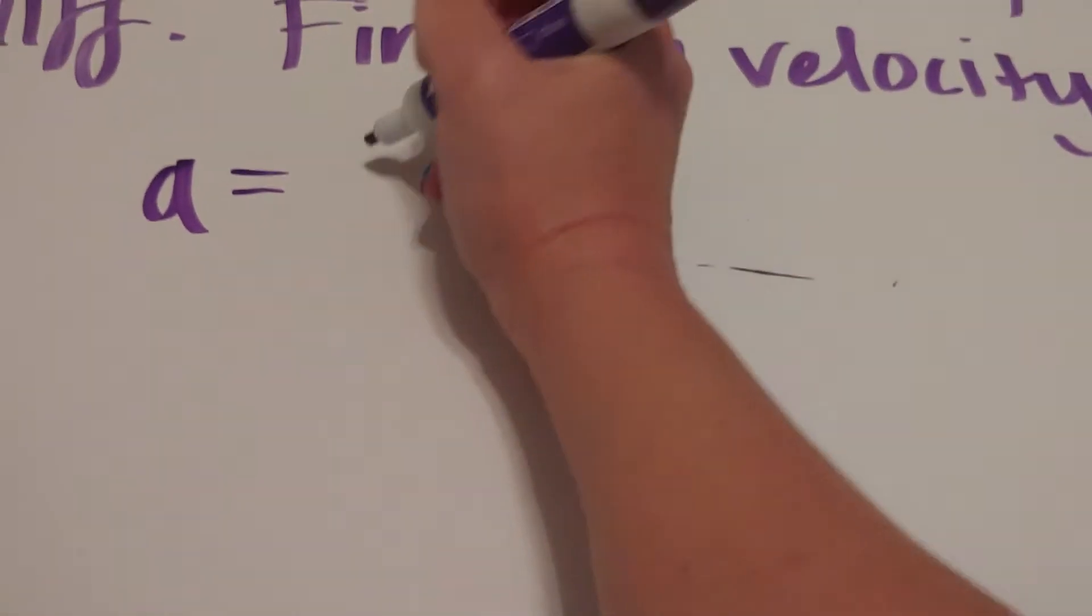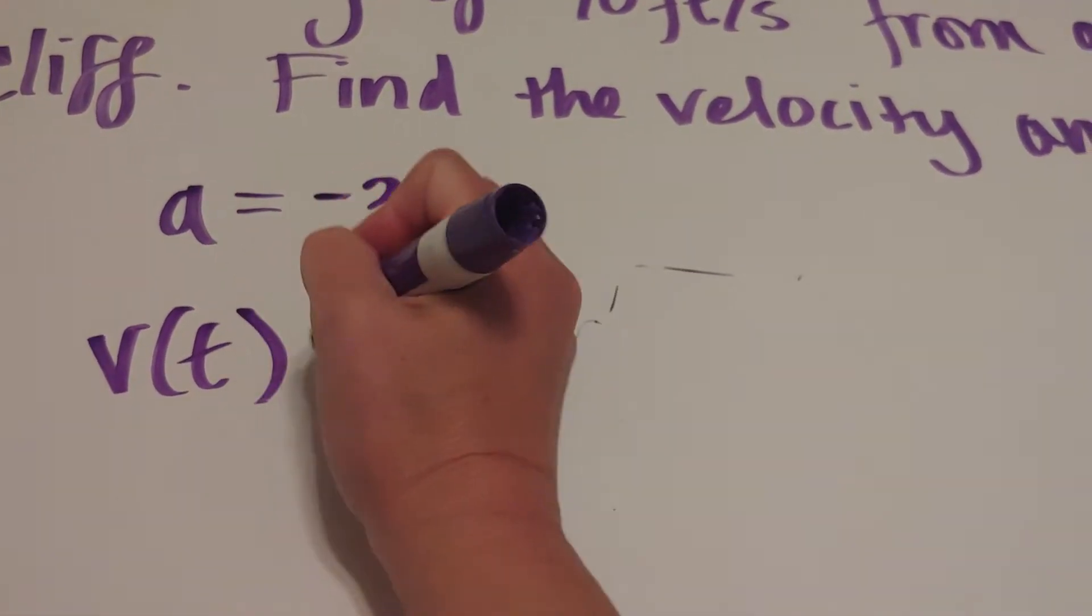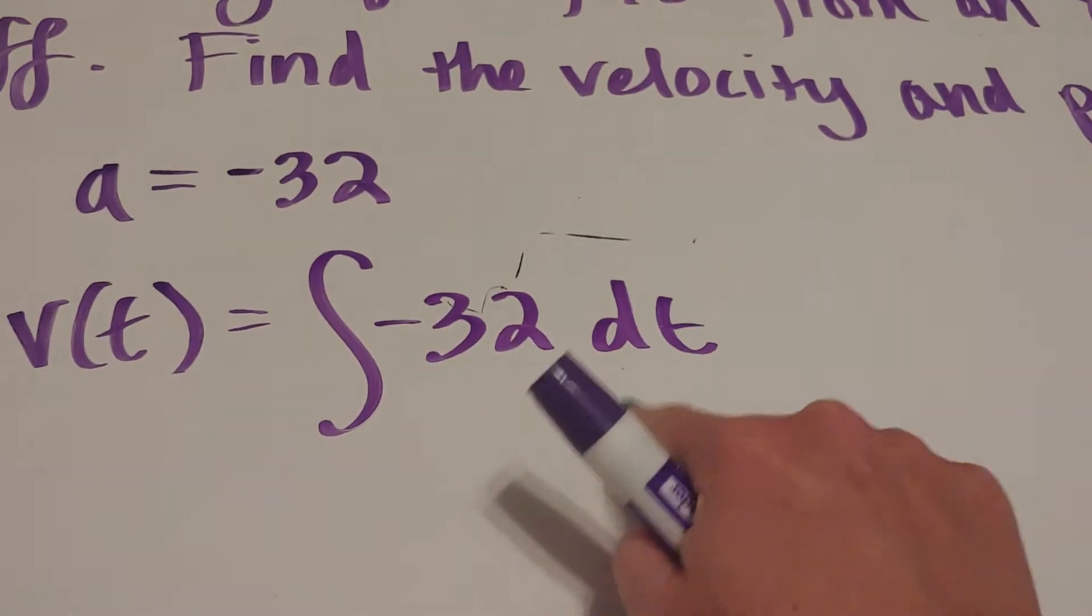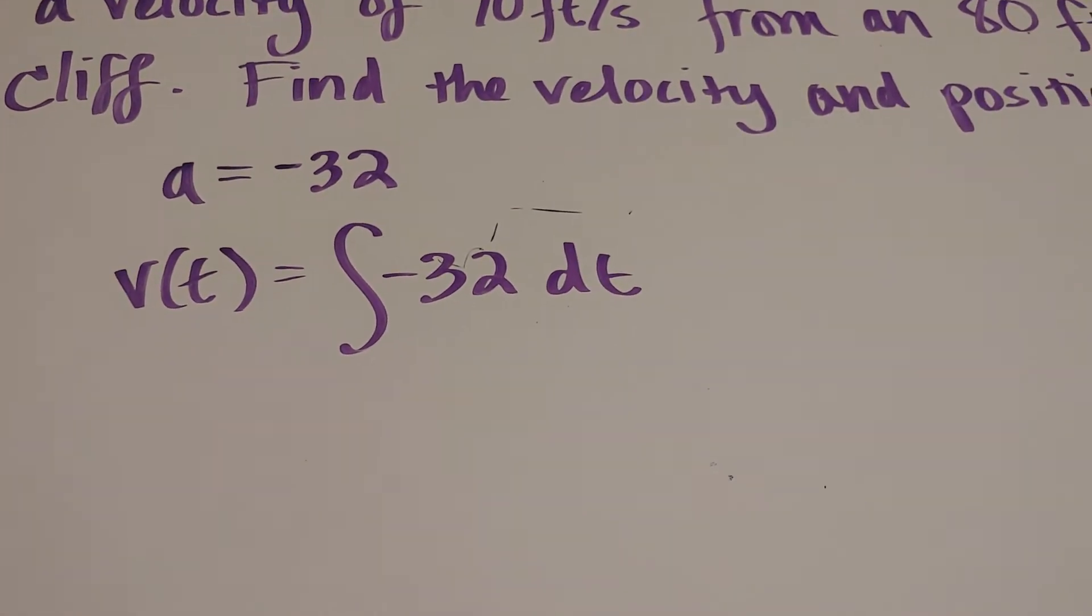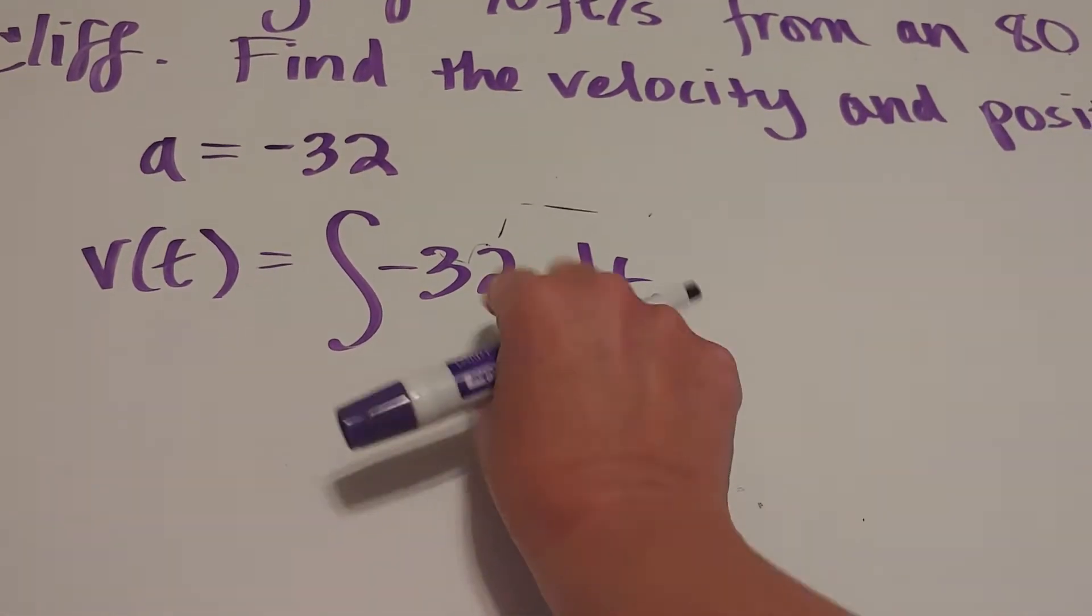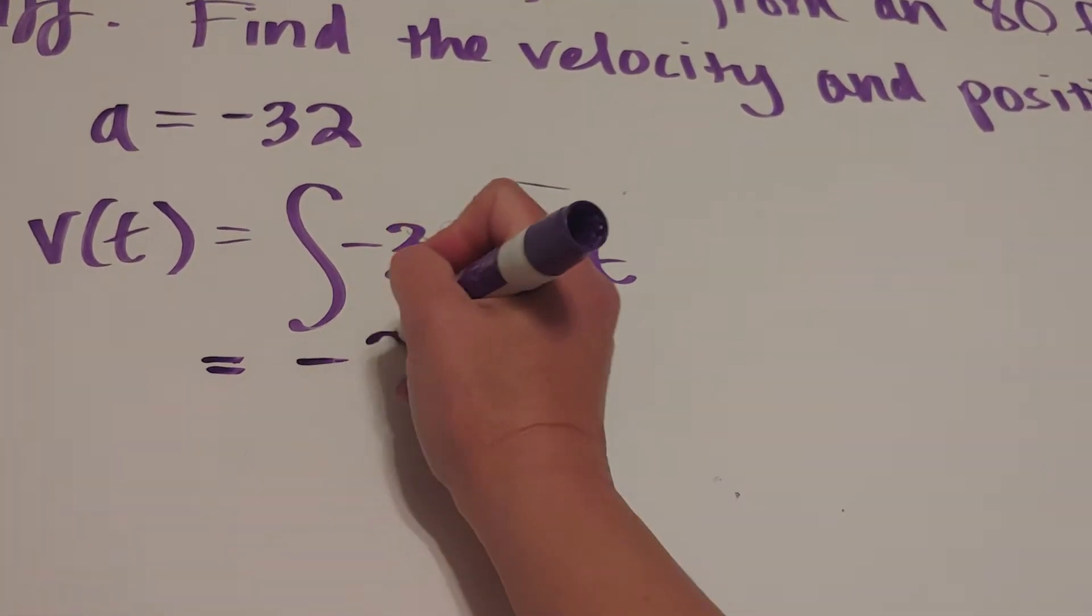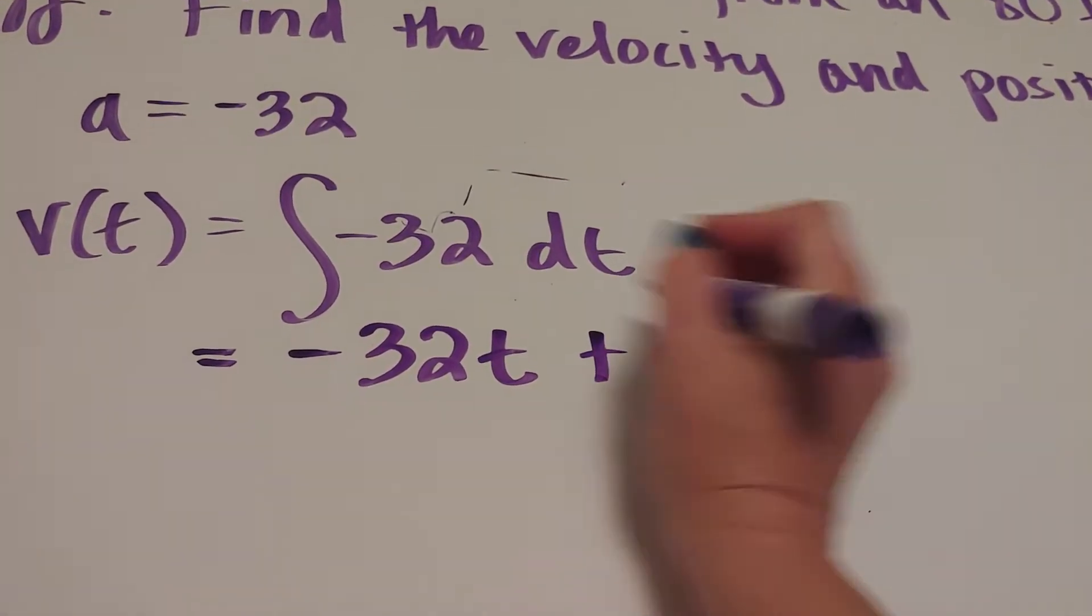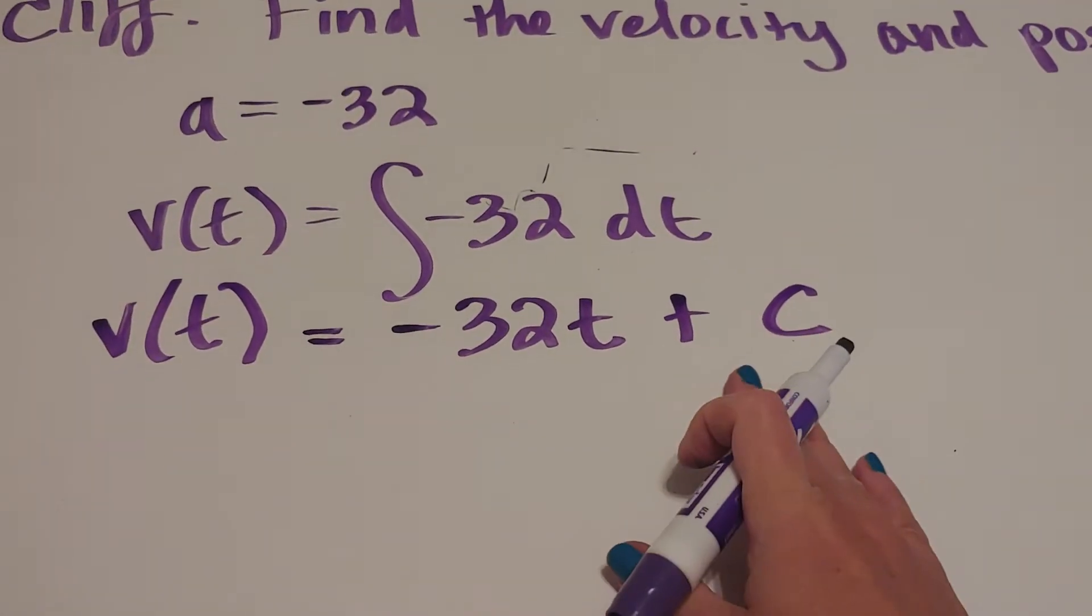So what I want to do to get the velocity is I'm going to integrate acceleration, and t is going to be my chosen letter because it's always with respect to time when we're talking about velocity and position in these cases. So if I want to integrate negative 32, I would get negative 32 times - but because it's a dt, I'm going to write t. I'm going to add a constant. So that's my velocity equation.